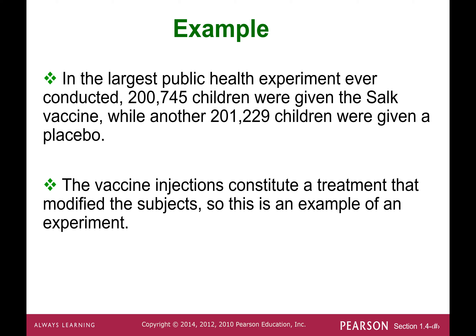Another example: in the largest public health experiment ever conducted, 200,745 children were given the Salk vaccine while another 201,229 children were given a placebo. The vaccine injections consist of a treatment that modifies the subjects. When you inject a vaccine into the human body, you're making a modification. So this is a typical experiment — there is human intervention involved.